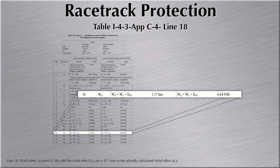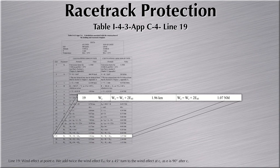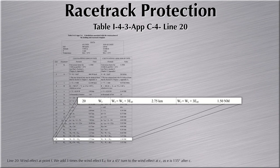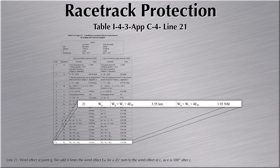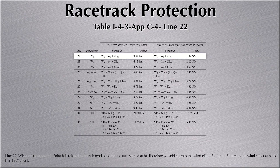Line 19: wind at E is the wind effect at C plus 2 times 45 degrees of turn. Line 20: wind F is the wind at C plus 3 times 45 degrees of turn. Line 21: wind at G is the wind at C plus 4 times 45 degrees of turn.